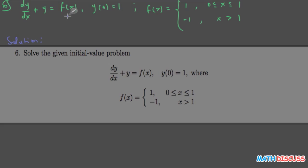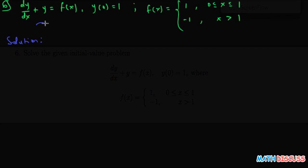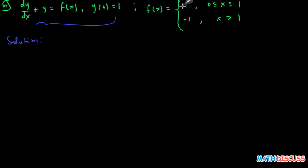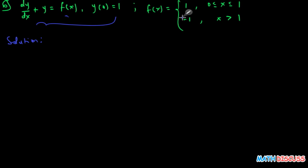We're given question six, an initial value problem with an initial condition. The forcing function here is a piecewise function. Our aim is to find a solution that is not just any solution, but a continuous function. Since f(x) has been defined for two ranges of x, we will consider each of them separately in solving this differential equation.